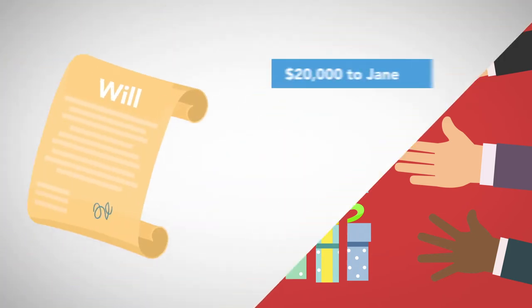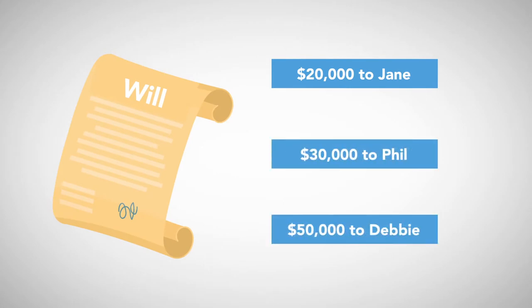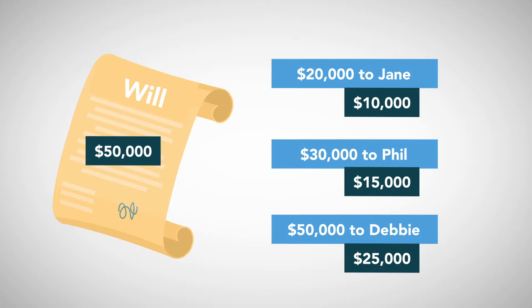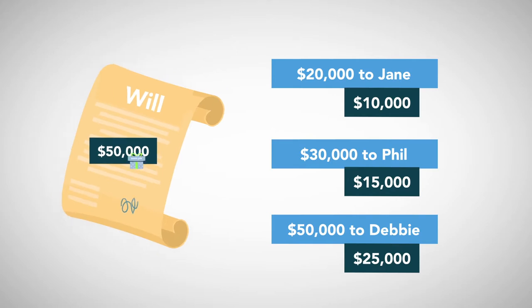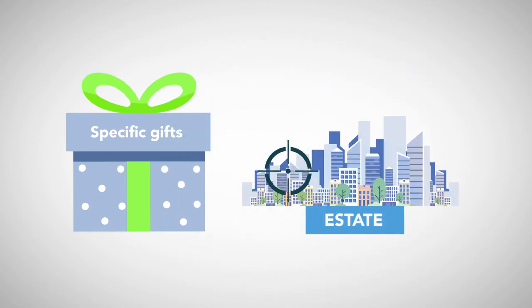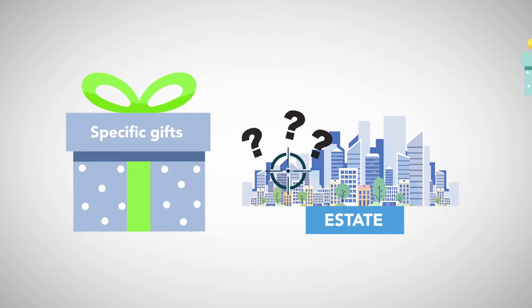So, for example, where a will gifts $20,000 to Jane, $30,000 to Phil, and $50,000 to Debbie, but the estate only has $50,000 after debt, each would receive only half the gift. Jane would receive $10,000, Phil would receive $15,000, and Debbie the remaining $25,000. Specific gifts are not subject to abatement. Either the specifically referenced gift is in the estate and it is given to the beneficiary, or it is not and it adeems.